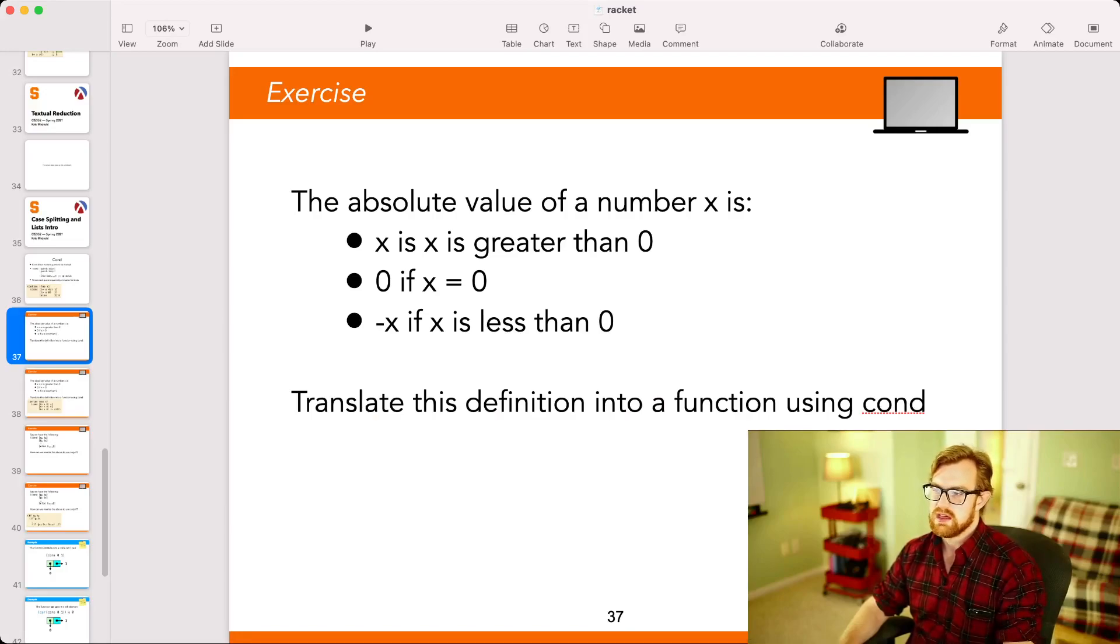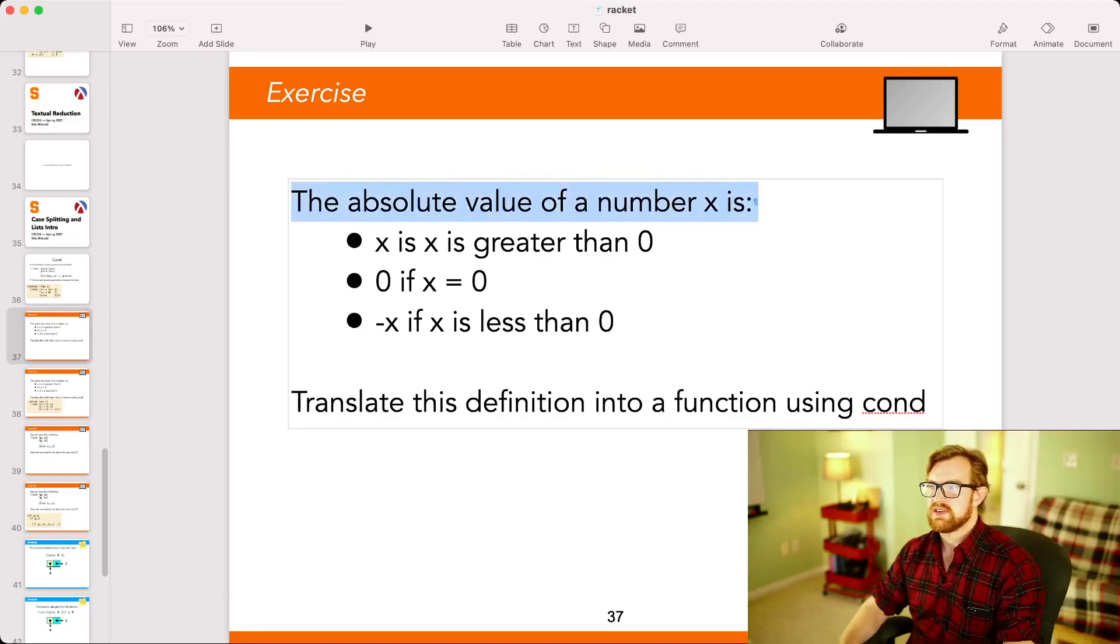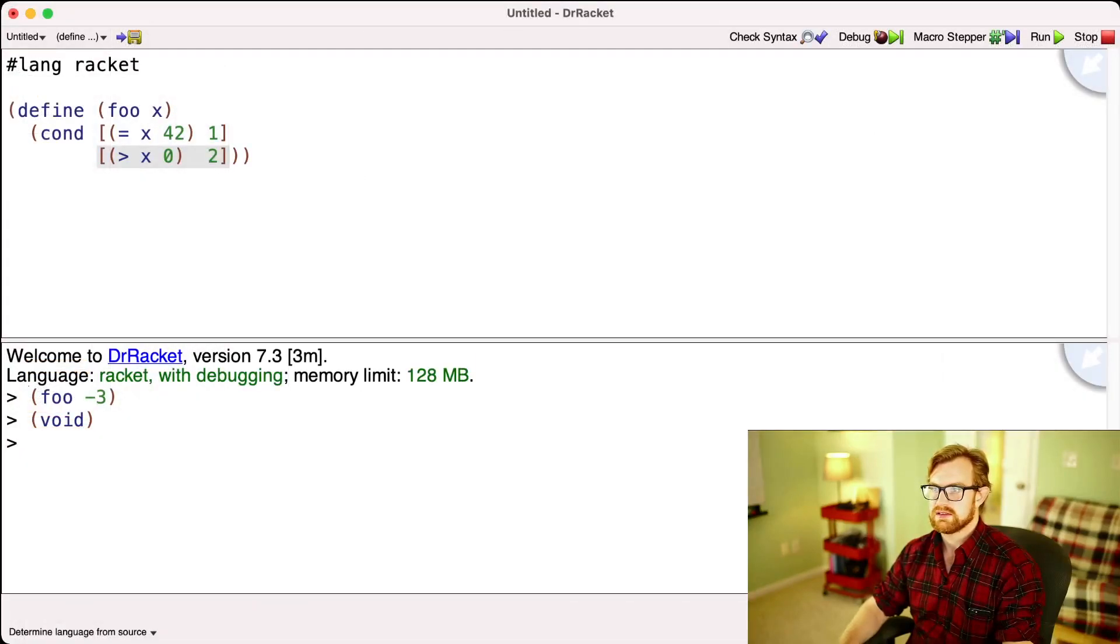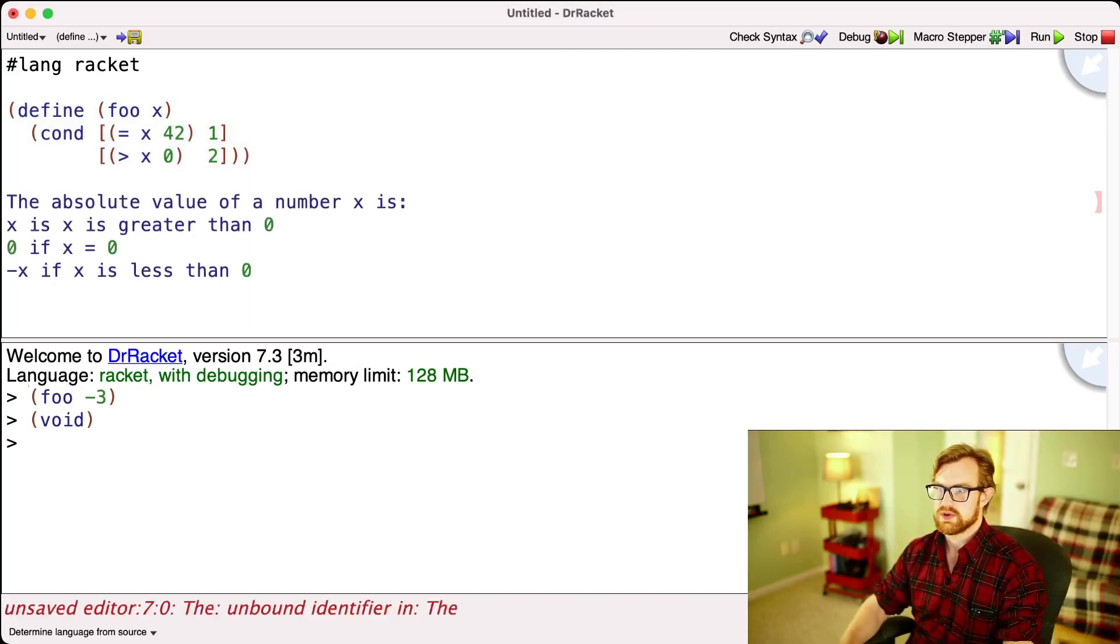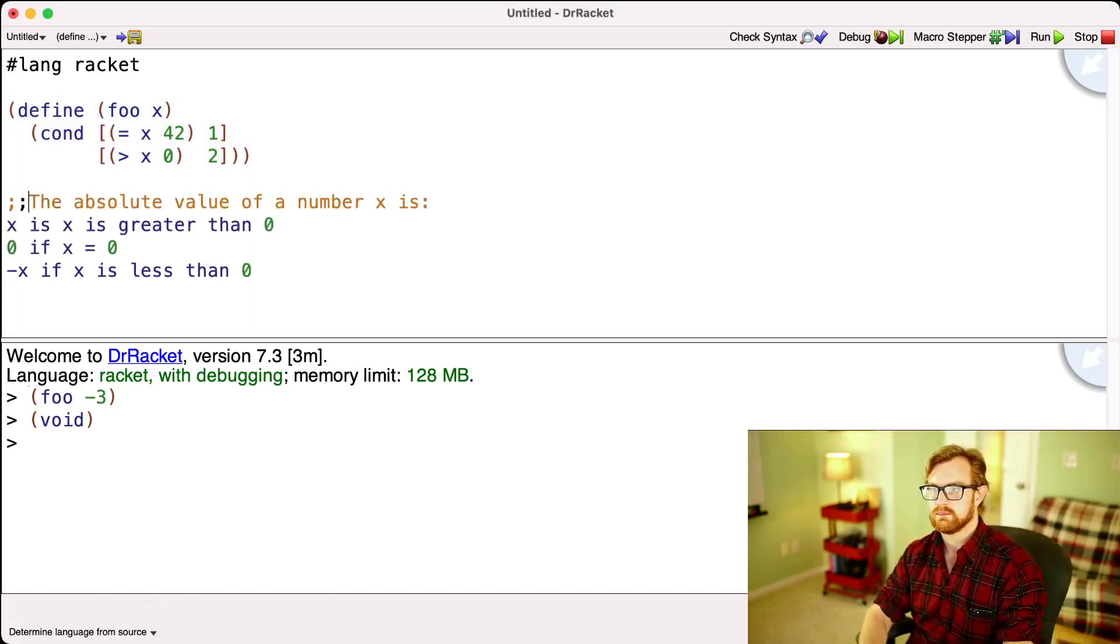We have this exercise that says, translate the definition using cond here to satisfy this definition we've got. So let's copy and paste this over into dr racket. This is the function we have to write.